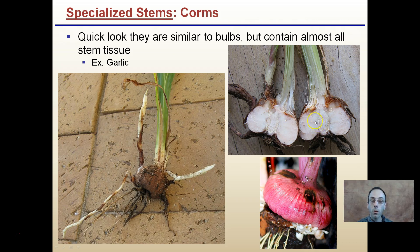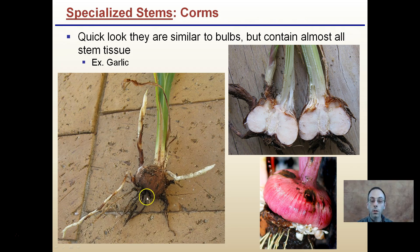If you've ever eaten garlic or are familiar with it, garlic is a prime example of a corm. If we take the cross section, it's almost all stem tissue, which is what they look like on the outside. Hopefully this is helpful in going over some of the specialized stems that do exist.